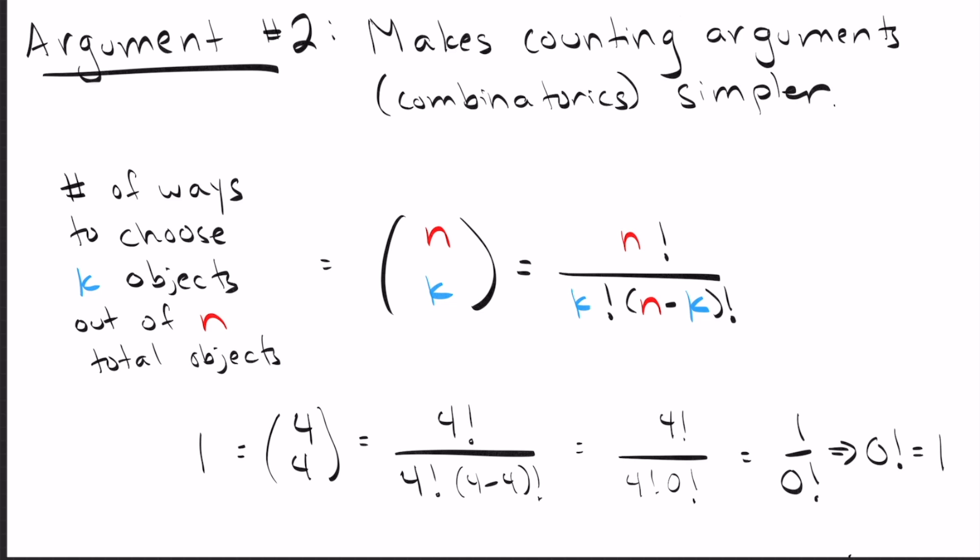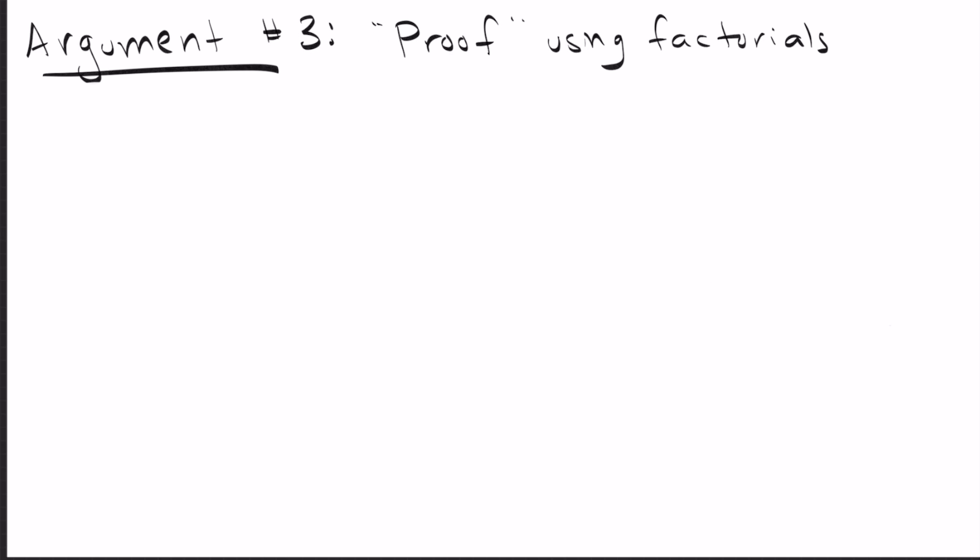Let's go ahead and jump to the third argument. The third argument tries to just prove it using math. I said the problem with these first two arguments is they're not really using math to prove their point. They use math up to a point and then they stop and just make a logic argument. This one tries to do it entirely using math. What it says is, what does it mean to take n factorial? n factorial means n times n minus one all the way down until you get to multiplying by just one.